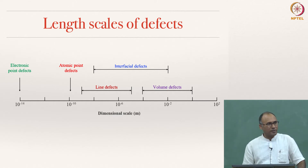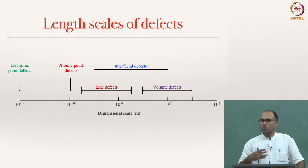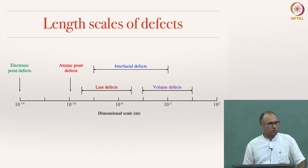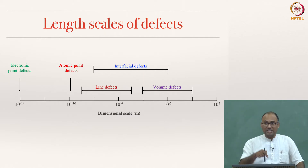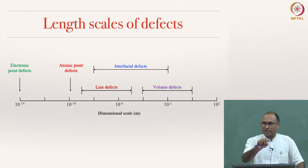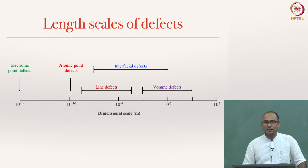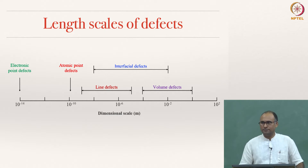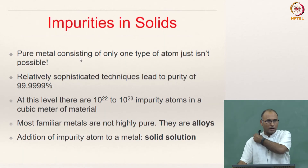To look at atomic point defects, you need a much more powerful microscope, such as a transmission electron microscope. There you can actually see individual point defects — whether an atom is sitting there or not. Nowadays you can look at materials in that level of detail.